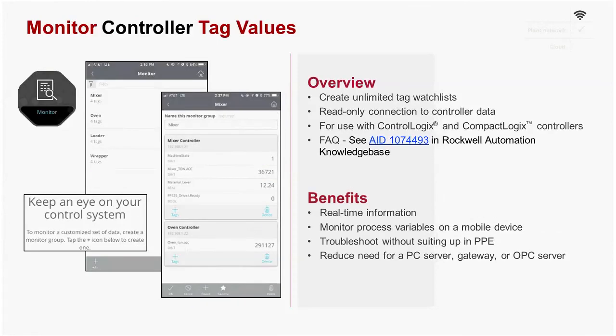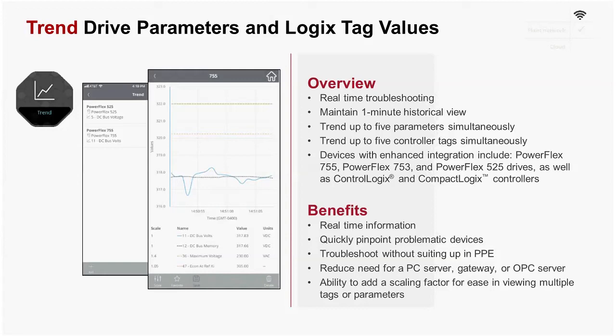You can use the Monitor module to track an unlimited number of PLC tag values in real time — this is a relatively new feature added in a recent release pack. Using the Trend module, you may trend up to five parameters or controller tag values simultaneously, which is particularly useful for troubleshooting. For example, you can view four different drive parameters on the same graph: DC bus volts, DC bus memory, max voltage, and more.